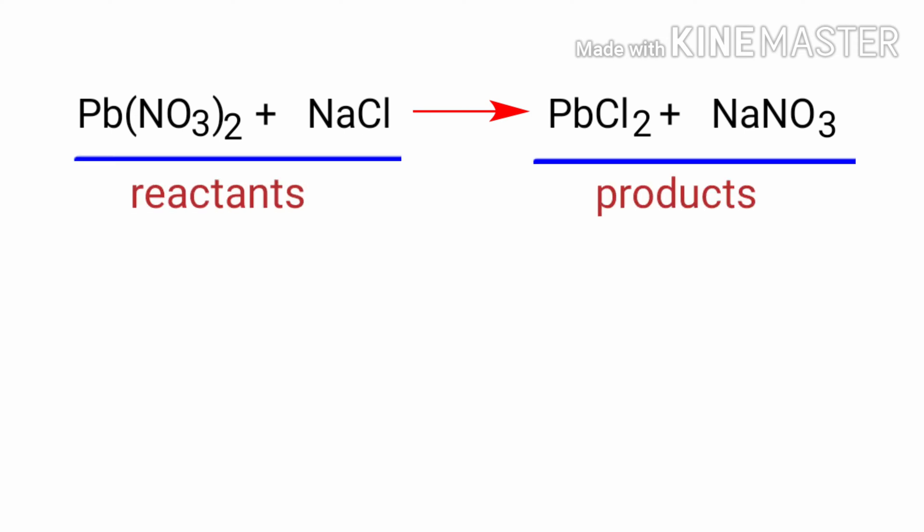In this equation, the reactants are lead nitrate and sodium chloride, and the products are lead chloride and sodium nitrate.